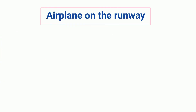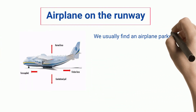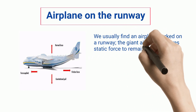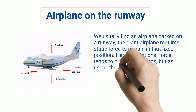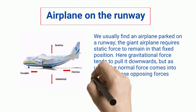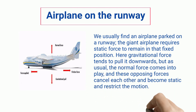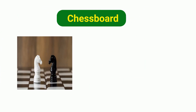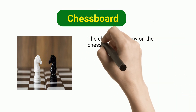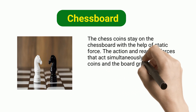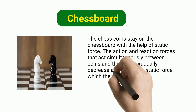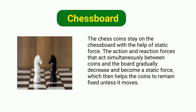An airplane parked on a runway requires static force to remain in that fixed position. Gravitational force tends to pull it downwards, but the normal force comes into play and these opposing forces cancel each other and become static, restricting the motion. Similarly, chess coins stay on the chessboard with the help of static force; the action and reaction forces acting between coins and the board become a static force which keeps the coins fixed unless moved.